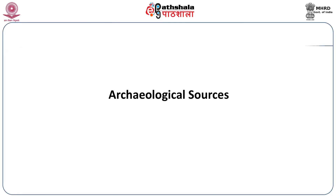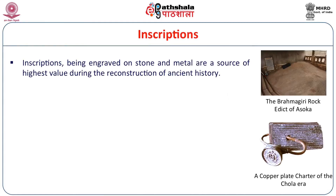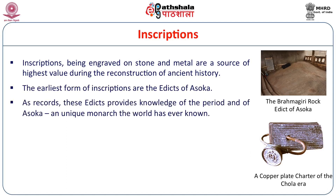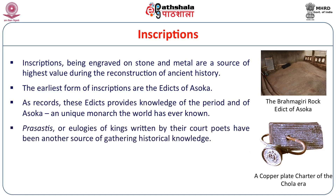In the case of inscriptions, because they have been engraved on stone and metal, they cannot be tampered with unlike literary sources, and therefore they are a source of highest value for the construction of ancient history. The earliest form of inscriptions are the edicts of Ashoka, found from beyond the Indus in the west to the Mysore plateau in the south. These edicts provide knowledge of the period and of Ashoka, a unique monarch the world has ever known. Prashastis or eulogies of kings, written by court poets on stone slabs and pillars, have been used for gathering historical knowledge about society and economy. Land grants engraved on copper plates throw considerable light on the socio-economic condition of the period concerned.